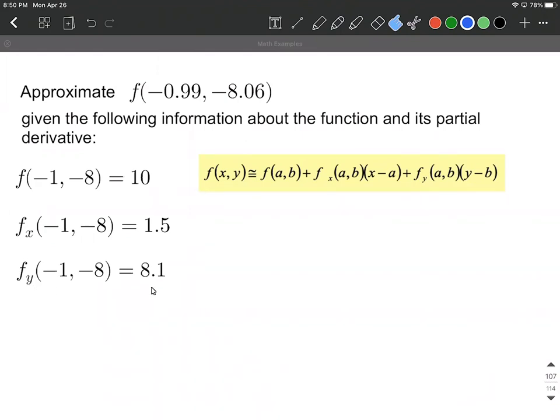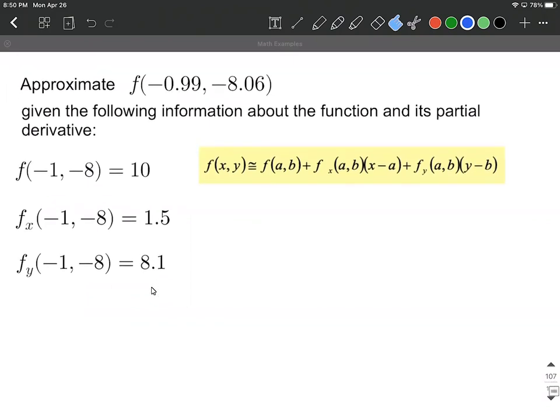So to get this approximation, let's fill in our formula over on the right-hand side. This is going to be f of x comma y, approximately. This is going to be our a and this is going to be our b as we fill in.